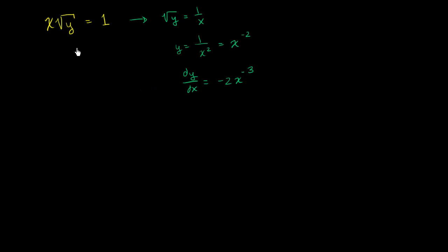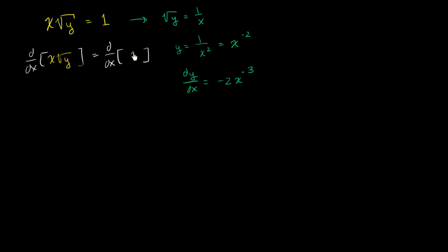But what I want to see is if we get the same exact result when we differentiate implicitly. So let's apply our derivative operator to both sides of this equation — x times the square root of y and 1. When you apply the derivative operator to the expression on the left-hand side, we are going to have to apply both the product rule and the chain rule.